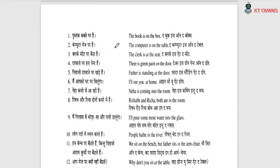Let's see examples. 'The book is on the box.' We use 'on the box.' 'The computer is on the table.' 'The clerk is on the seat' — but wait, the clerk is a human being; 'clerk' is a post. We work on the clerical post.